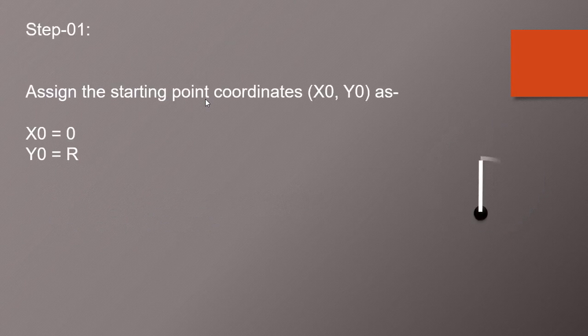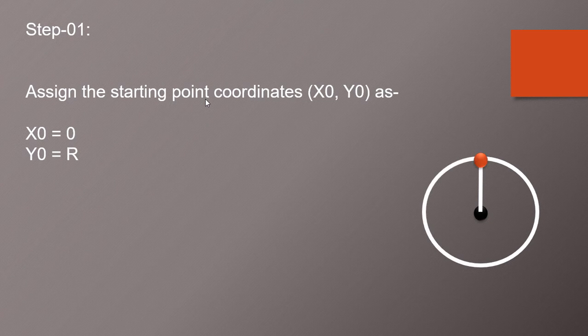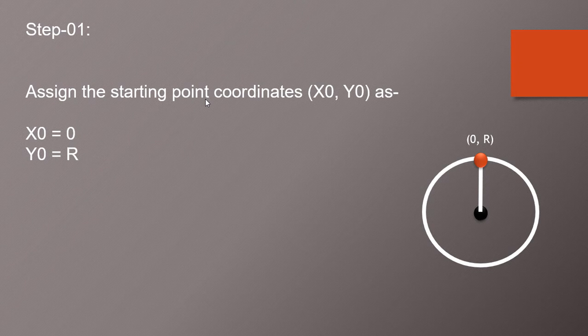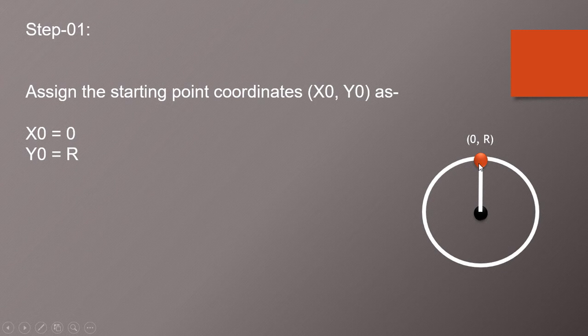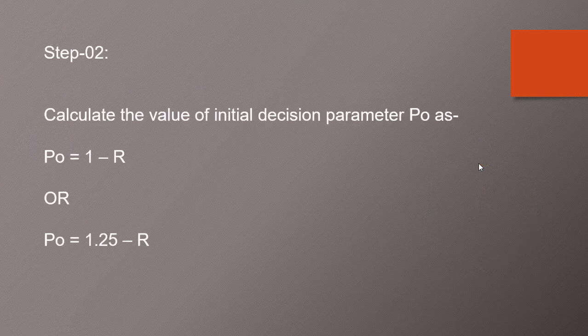At the start we need to start with our center of that circle and we need to point our starting coordinates of our circle. So initially X0 is 0 and Y0 is R. R is nothing but radius of that circle which is allocated here. So the first point is situated on our perimeter of that circle in this location.